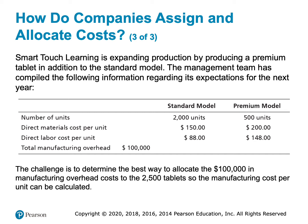Each standard model has $150 of direct materials; the premium model has $200 of direct materials. The labor cost for the standard model is $88 per unit; for the premium model, it's $148 per unit. So obviously the premium model is more expensive to produce — it uses more materials and a lot more labor. Total overhead is $100,000 for all products, covering indirect materials, indirect labor, depreciation on equipment, factory supervisor salary, factory insurance, and so on.